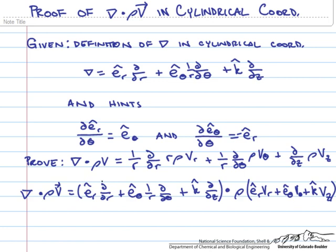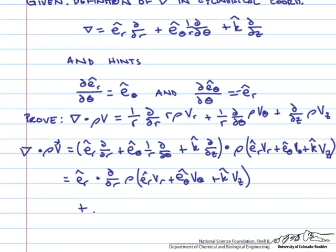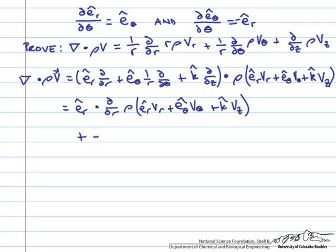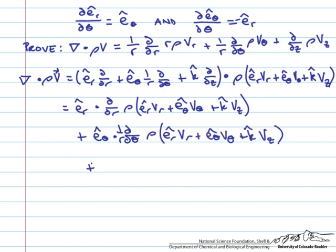The first term dotted with all of this gives ê_r dot (∂/∂r)(ρ times the velocity vector). For the second term, ê_θ dot (1/r)(∂/∂θ)(ρ times the velocity vector). And for the third term, k̂ dot (∂/∂z)(ρ times the velocity vector).